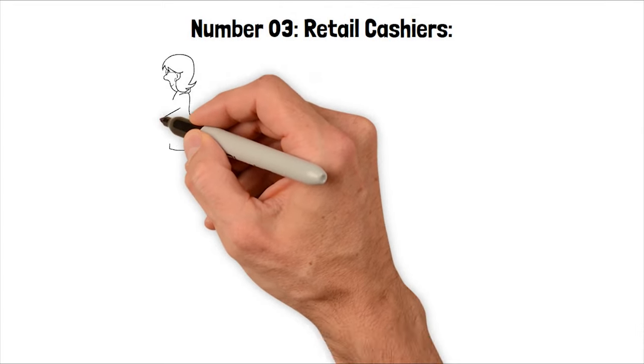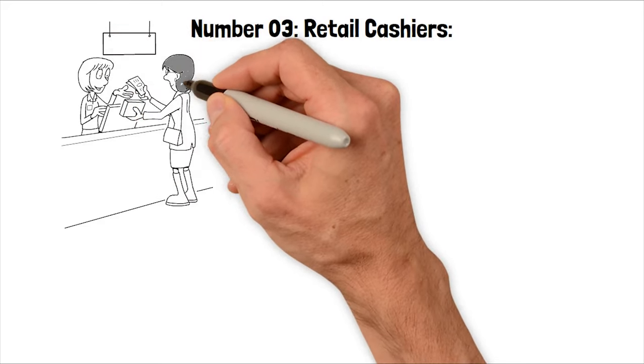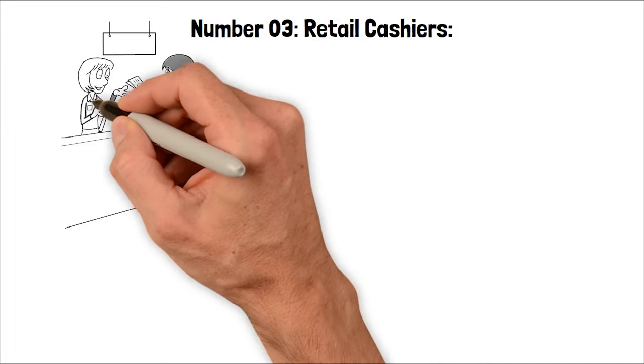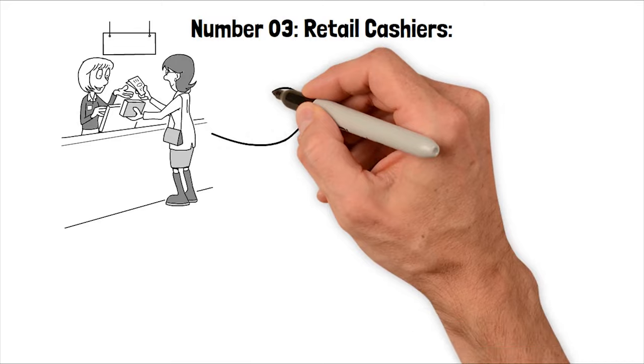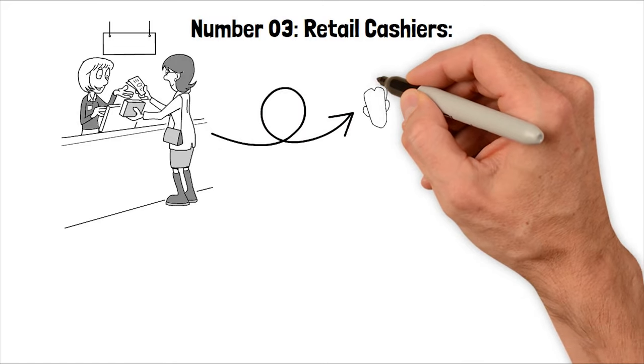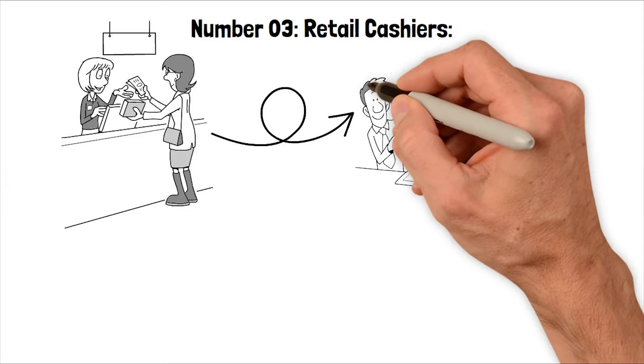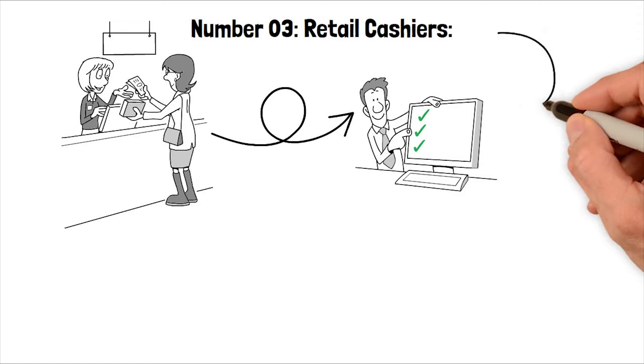Number three, retail cashiers. Retail cashiers are experiencing a transformation due to AI technology reshaping the checkout process. Self-checkout kiosks and cashier-less stores, powered by AI, are becoming more prevalent, eliminating the need for human cashiers. These systems use computer vision and sensors to scan items and process payments seamlessly.